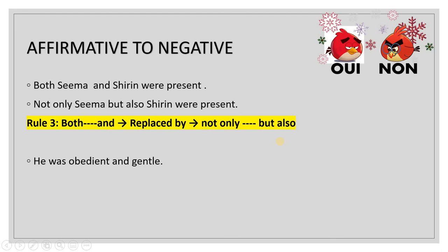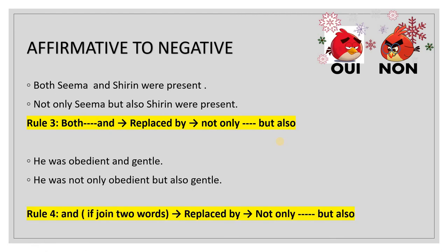'He was obedient and gentle' is affirmative. It becomes 'He was not only obedient but also gentle.' So when 'and' joins two adjectives, those two adjectives can also be joined by 'not only...but also' in the transformed negative sentence.